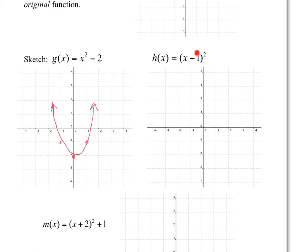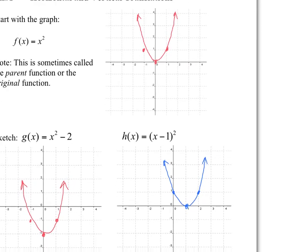Now x minus 1 squared — what this does to the graph is move it 1 to the right. When x equals 1, 1 minus 1 is 0, 0 squared is 0. So you're moving everything over to the right one. All three of these points are going to move 1 to the right. Comparing that to the original: same graph, moved over 1 to the right.